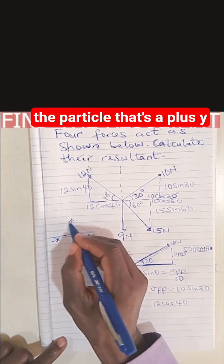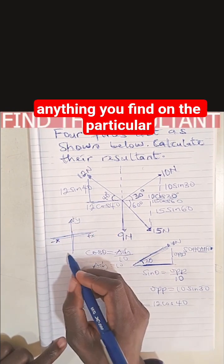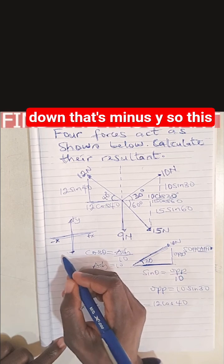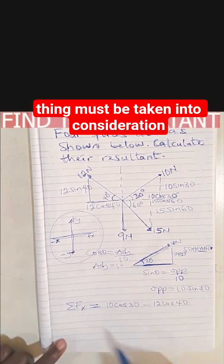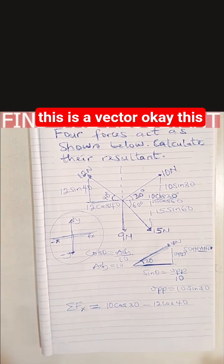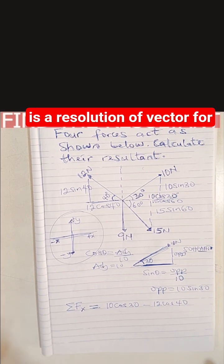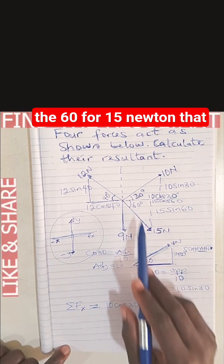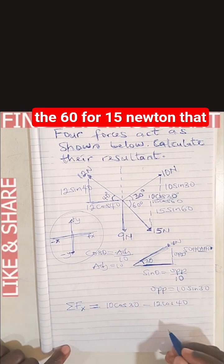Anything you find on the particle going up, that's plus; anything down, that's minus. This must be taken into consideration - this is a vector. This is resolution of vectors. For the 15 Newton at 60 degrees, that will be plus 15 cos 60.